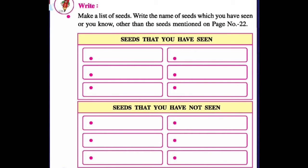Two boxes are given: seeds that you have seen, and seeds that you have not seen. So first, seeds that you have seen — I am writing few names of seeds which I have seen.